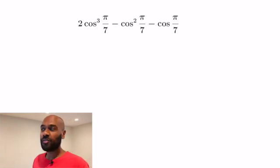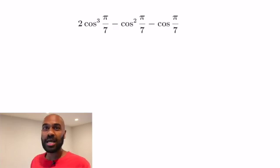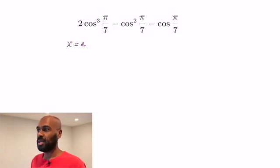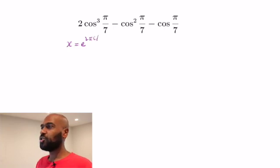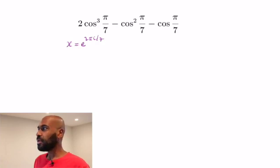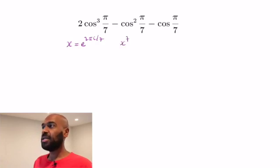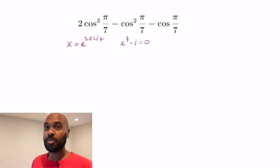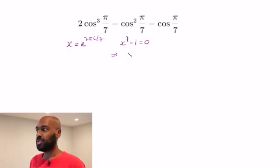To start off with the first proof, we're going to look at cosine and sine in polar form. We introduce the number x = e^(2πi/7). So x^7 = e^(2πi), and e^(2πi) is actually 1. So x^7 minus 1 equals 0.